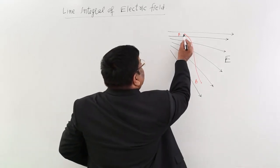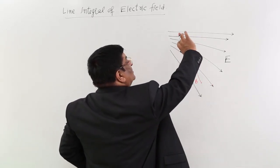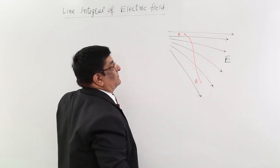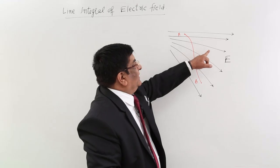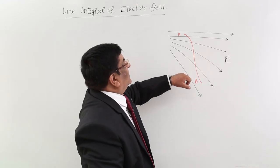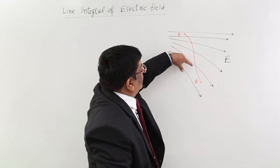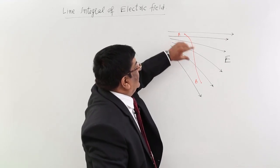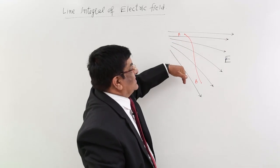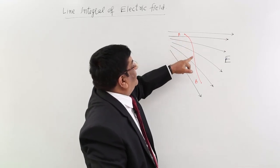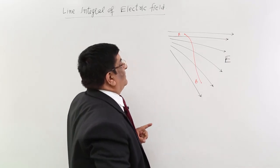There are two points A and B, and this is a path that a charge travels through. These lines show the electric field. At all the different points along this path, the direction of the electric field is different and the magnitude of the electric field is different.